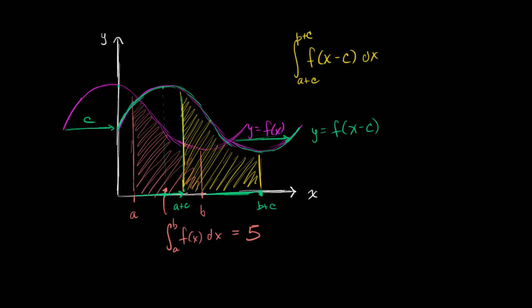This right over here is going to be this exact thing. We just shifted everything. We shifted the function to the right, we shifted the bounds to the right. And so this is going to be the same thing as the integral from a to b of f of x dx, which in this case is going to be equal to five.